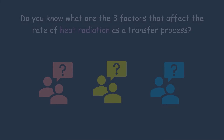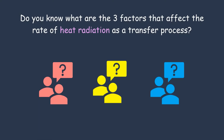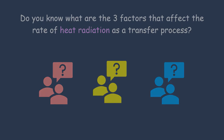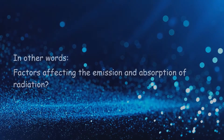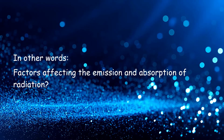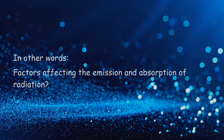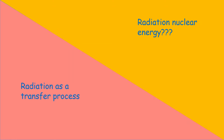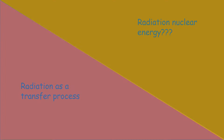Do you know what are the factors that affect the rate of radiation? That means the factors affecting the emission and absorption of radiation. Keep in mind that I am talking about heat's radiation as a type of heat transfer process, instead of radiation about radioactive materials. There are three main factors that affect the rate of radiation.